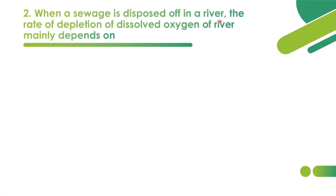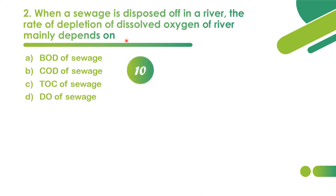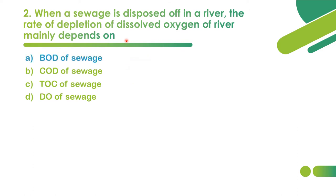Second question: when sewage is disposed into a river, the rate of depletion of dissolved oxygen mainly depends on what? A natural river contains zero BOD and higher dissolved oxygen. The rate of depletion of dissolved oxygen will mainly depend on the BOD of the sewage — if BOD is higher, the rate of DO depletion will be more.